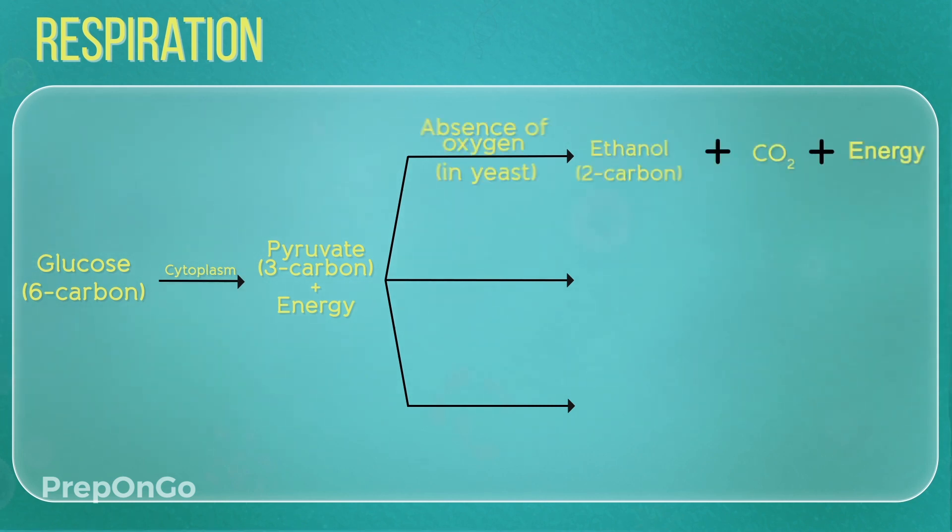The first case is yeast where it respires in the absence of oxygen. Now the pyruvate here gets converted into ethanol, carbon dioxide and energy. Now the ethanol is a two carbon molecule.